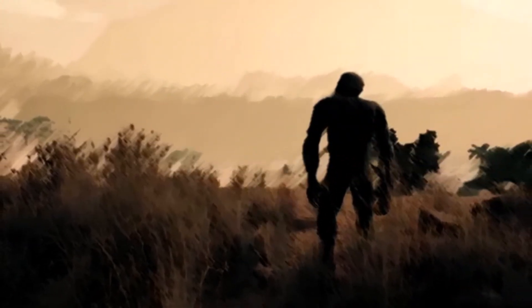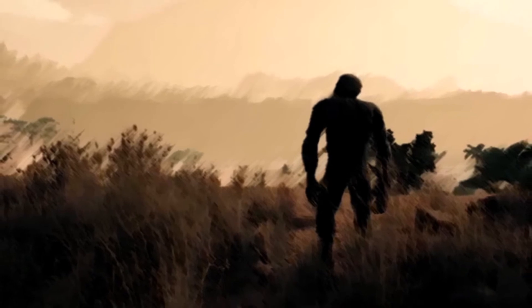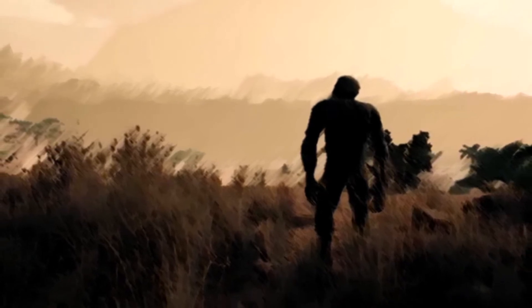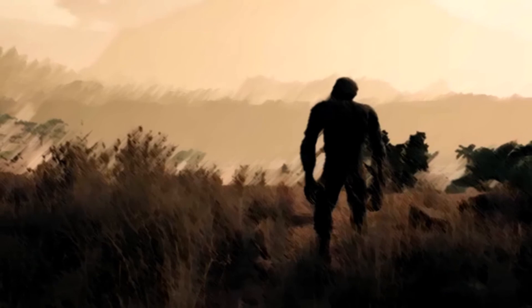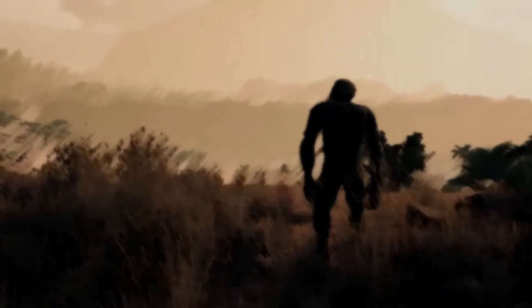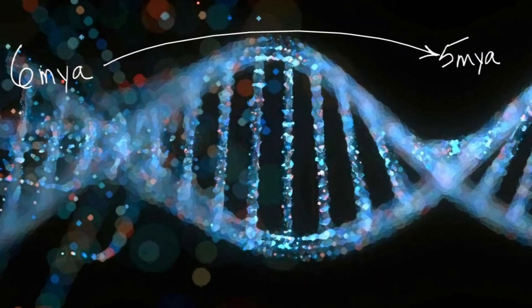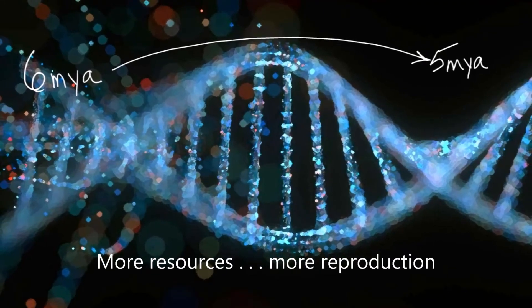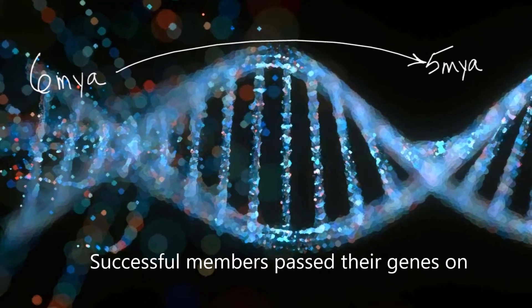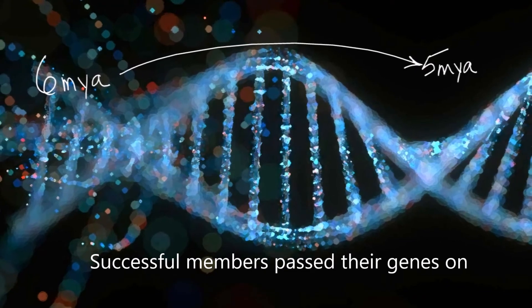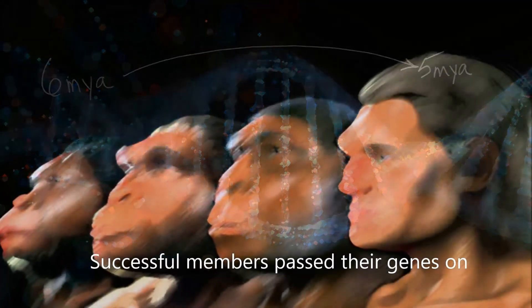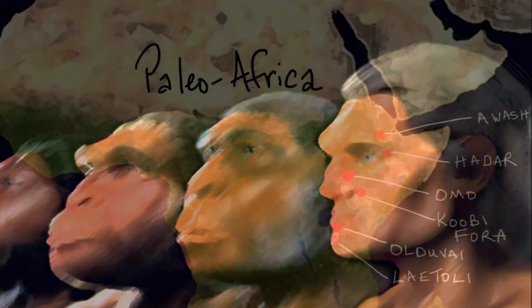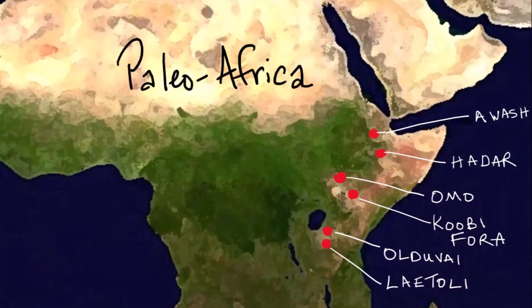Hominins began to explore, exploit resources during warmer periods of the day, and covered more distance as they searched for food. Over the next million years, success increased, and the new way of moving was transmitted from one successful generation to the next, and it eventually became the norm. It shaped our evolutionary history, as the fossil record illustrates.